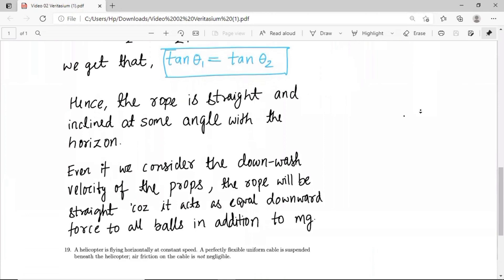Unless we consider that the downwash velocity is not the same throughout the length of rope, everything is going to be very easy.